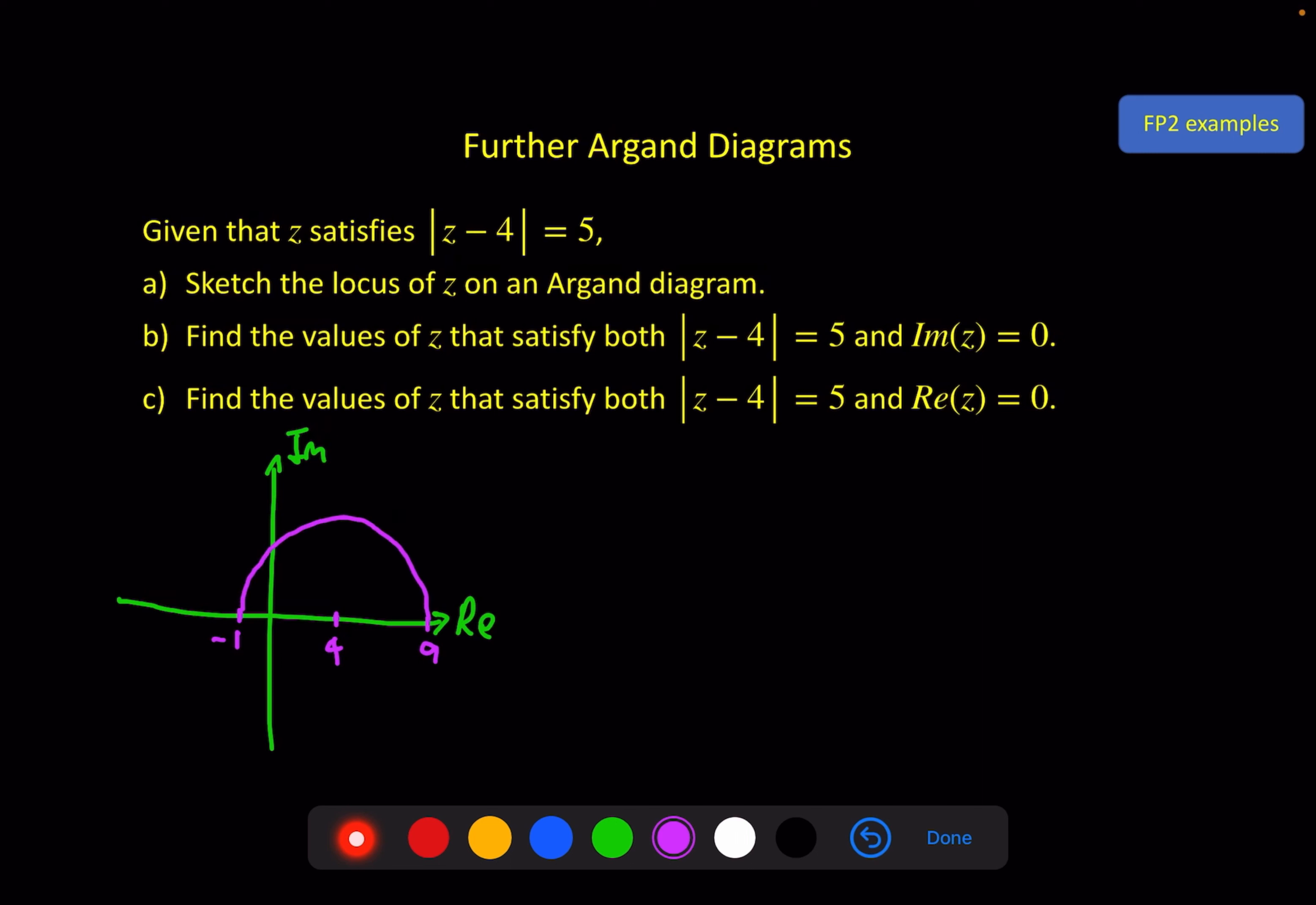So the 5 is telling us the radius of this circle. It looks something like this, where this is a 5, and this is a -5. Part b, we have to find the values of z that satisfy both this statement, so it needs to be on this locus somewhere, and the imaginary part of z equals 0.